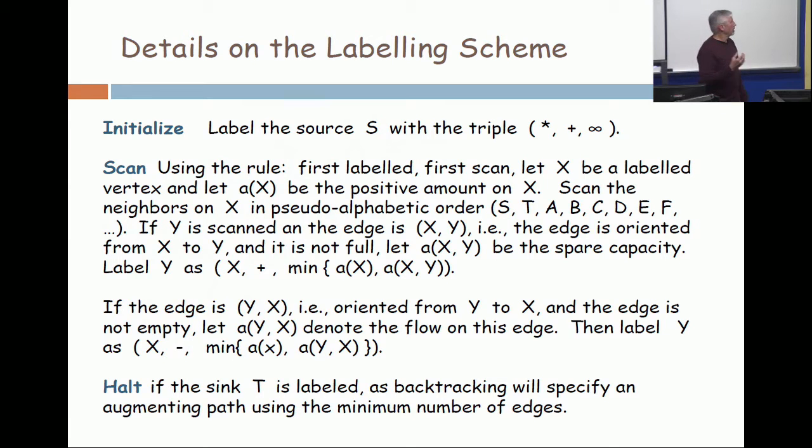and the vertices are labeled 1 through 100,000. What I want to capture with my alphabet is that my source is my first vertex, and my sink is not the last, it's the second. So number one is source, number two is sink. It will become clear why I want the sink to have this early position. Roughly speaking, the whole goal is to get to the sink, so put it close to the source and scan it as soon as you can.